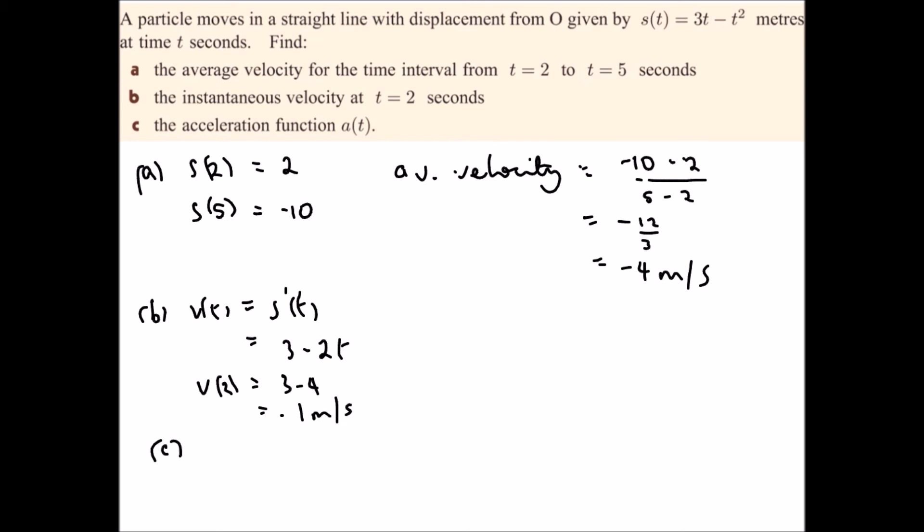And part c, we want the acceleration function. So acceleration is the change in velocity over time. So we differentiate the v function and would end up differentiating v here, we get negative 2 meters per second squared.